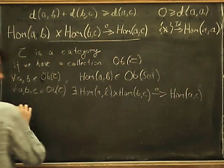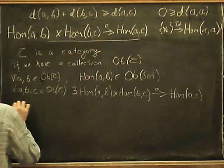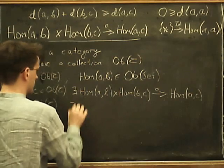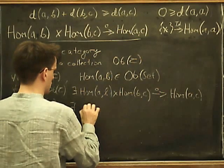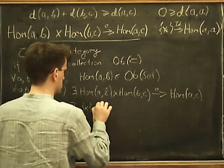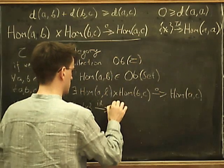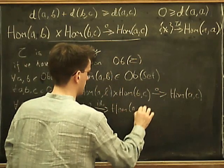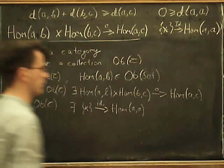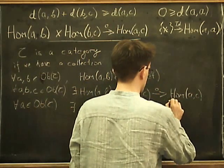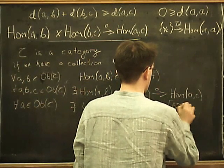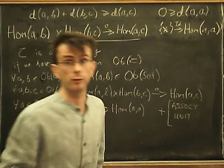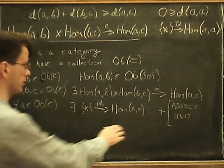And we also have the identity. So for all A in the objects of C that exists a star, a map from the one object set, which we call the identity, into hom(A,A). And these satisfy some conditions. So we have associativity and the unit identity, which I won't write down for you, but you know what they are.